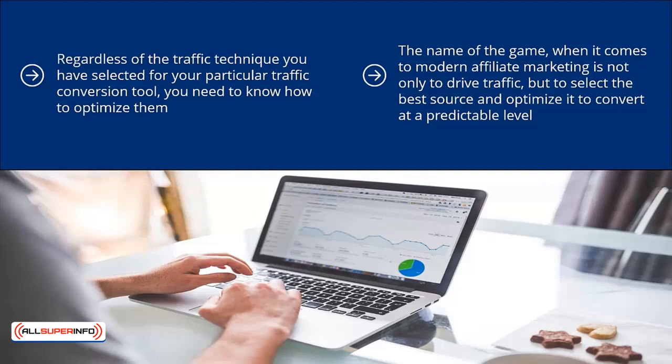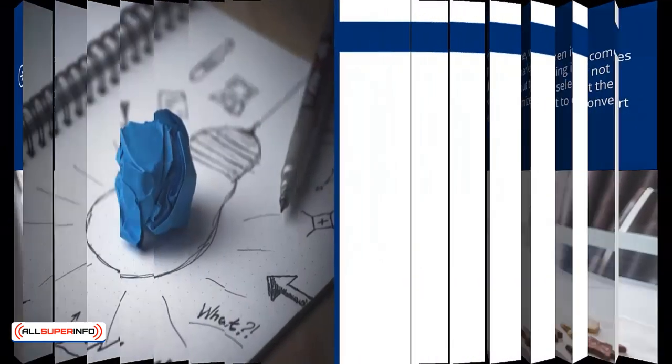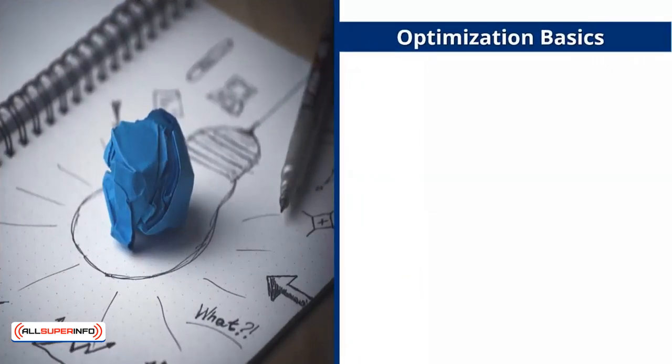If you're not doing this, you're playing the game to lose. Here are some ideas for you to chew on so you can come up with your own customized optimization strategies that fit your set of circumstances. Optimization basics: here are the basic steps for optimizing online traffic. This is pretty general because it is designed to cover as many different types of traffic as possible — you have to modify them to fit the specific type of traffic you're trying to optimize. Step number one: discover what works.